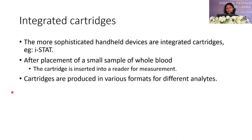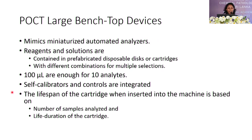Integrated cartridges are more sophisticated handheld devices. A small amount of whole blood is placed into the cartridge for measurement, then the cartridge is inserted into the reader. Cartridges are produced in various formats for different analytes. Large POCT bench-top devices mimic miniaturized automated analyzers, with reagents and solutions contained in prefabricated disposable disks or cartridges with different combinations according to the analytes selected. Usually, 100 microlitres of sample is adequate for ten analytes, and self-calibrators and controls are integrated into these devices.